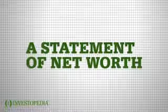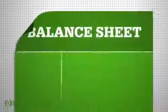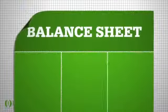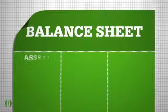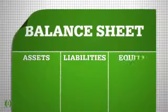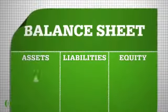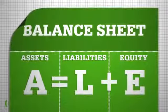A balance sheet is a statement of net worth. It's broken up into three sections: assets, liabilities, and equity. A equals L plus E.